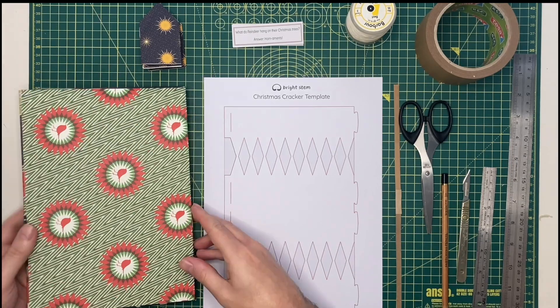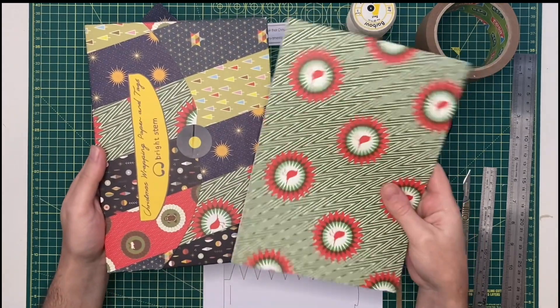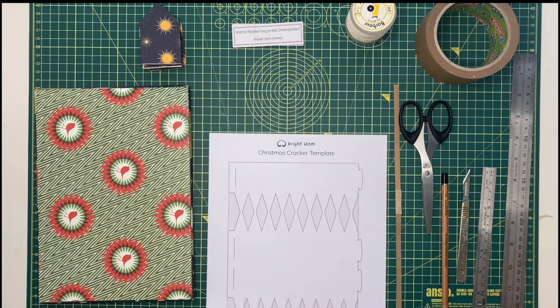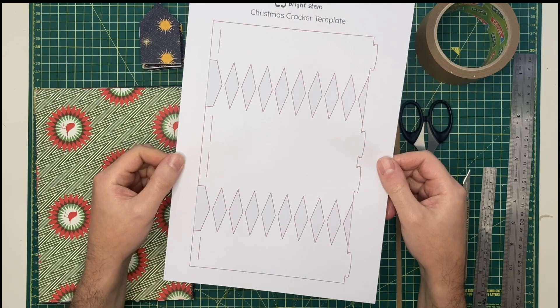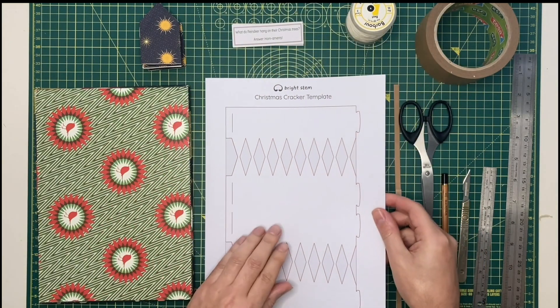Things you'll need include some Brightstem wrapping paper, the Christmas cracker template - you can download this from the blog post, the link should be in the description to the video.